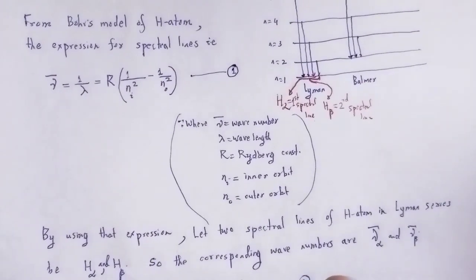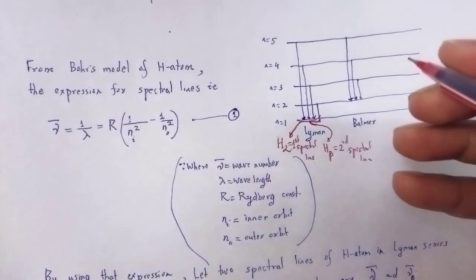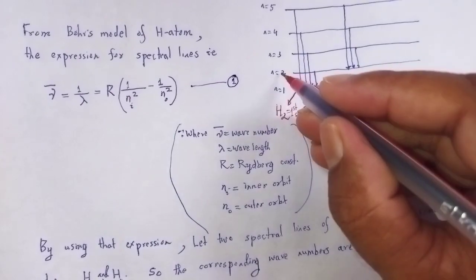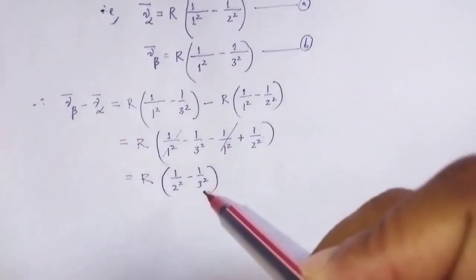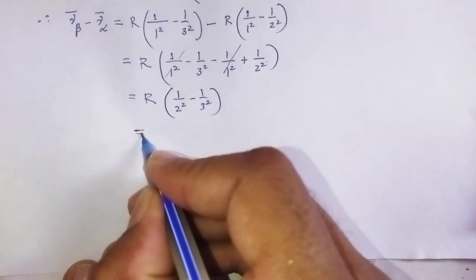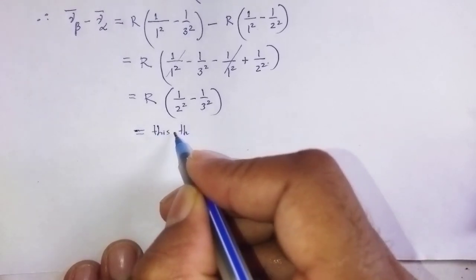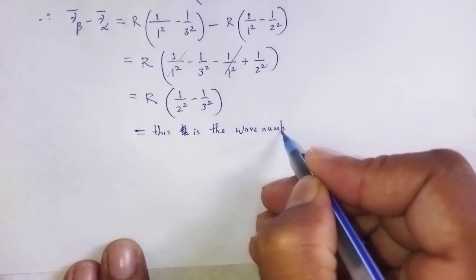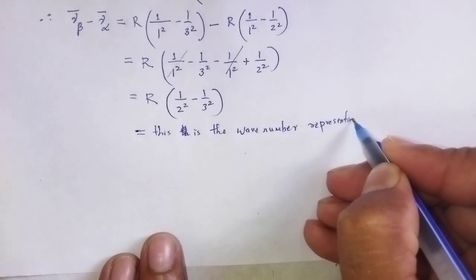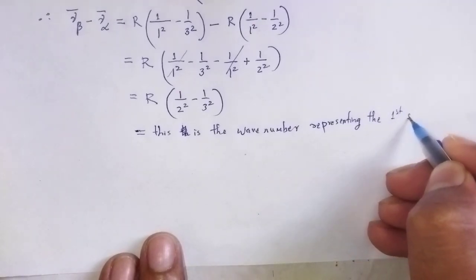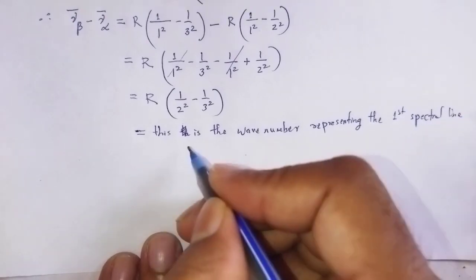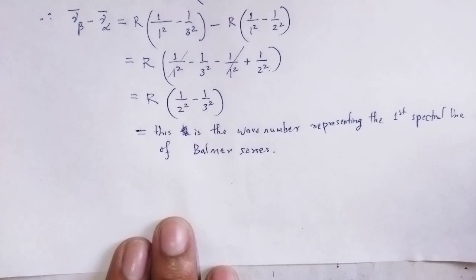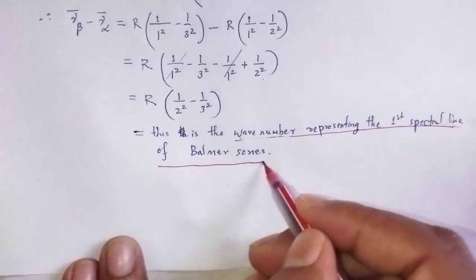Look here — in the case of the Balmer series, the first spectral line corresponds to a transition from n equal to 3 to n equal to 2. This gives rise to the expression R times (1/2² − 1/3²), which is exactly the wave number representing the first spectral line of the Balmer series.